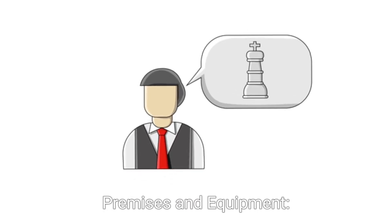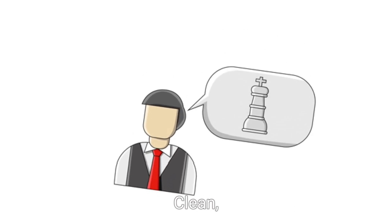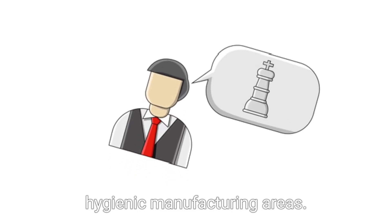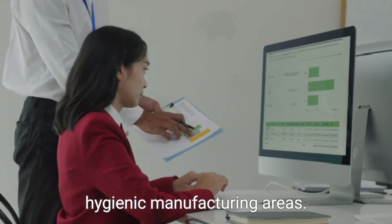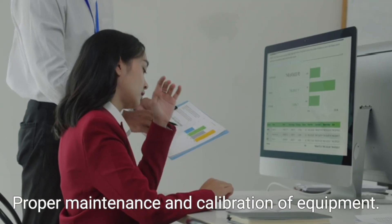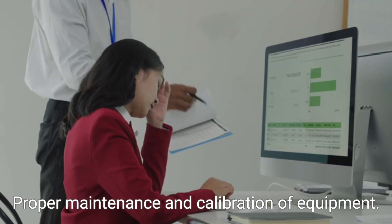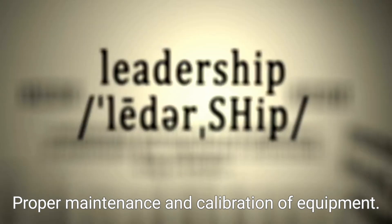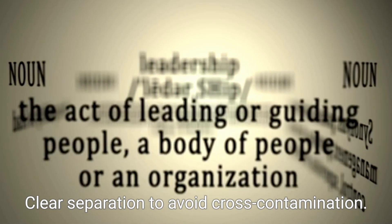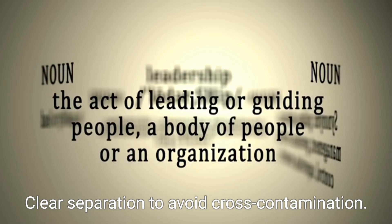3. Premises and equipment — clean, hygienic manufacturing areas; proper maintenance and calibration of equipment; and clear separation to avoid cross-contamination.